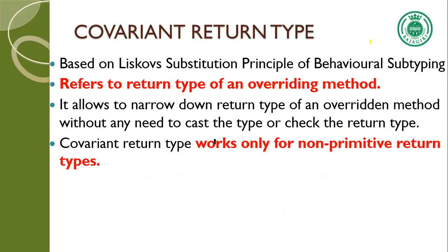Now, covariant return type refers to the return type of an overriding method. It usually works for non-primitive return types. We will see that with the help of an example — I'll write a program so that you understand it better.